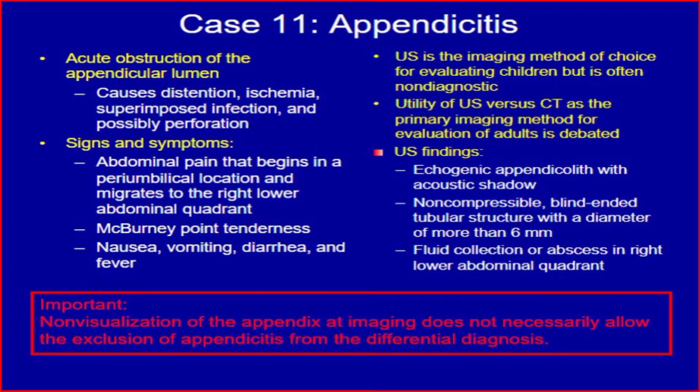Appendicitis is acute obstruction of the appendicular lumen, causing distension, ischemia, superimposed infection, and possibly perforation.